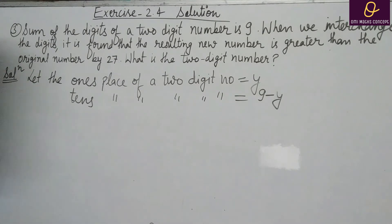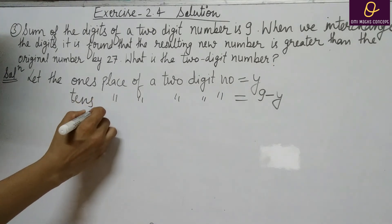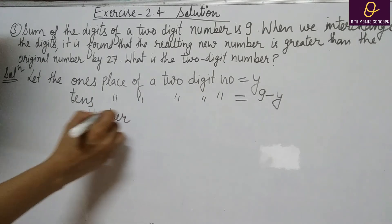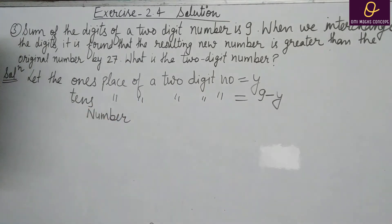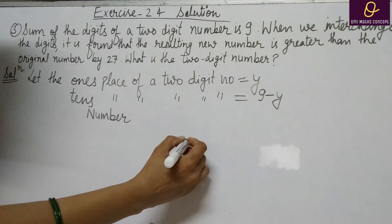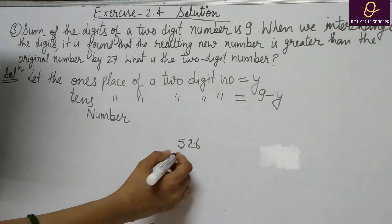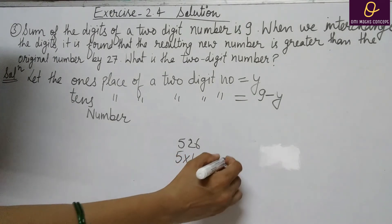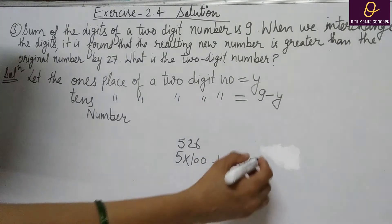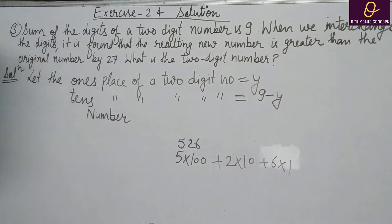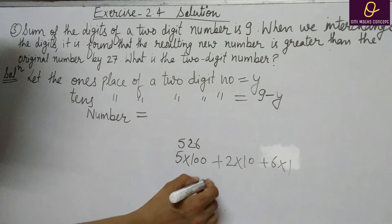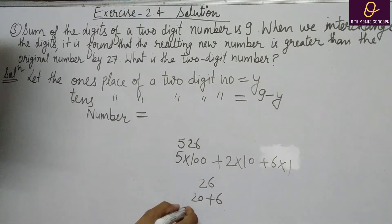Number कैसे form होगा? आपको expanded form याद है — जैसे 526 को expand करें: 5 into 100, 2 into 10, 6 into 1. अब वो expanded form यहाँ पे use करेंगे. तो 26 को: 2 into 10 plus 6 into 1 — ऐसे करते हैं.